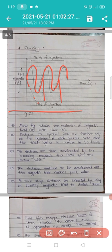The electrons continue to be accelerated till the magnetic field reaches its peak value. At this stage electrons are extracted by using an auxiliary magnetic field to deflect them. This high energy electron beam is then allowed to emerge out of the apparatus to strike on the target. These are the points of ejection.